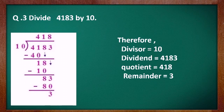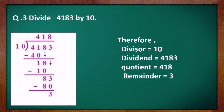4 tens are 40, so we subtract 40 from 41 and get 1. Then bring down the next number 8, giving us 18. Since 18 is greater than 10, and 10 × 1 = 10, we subtract to get 8. Then bring down the last number 3, giving us 83. 10 × 8 = 80, and after subtraction the leftover is our remainder — that is 3.